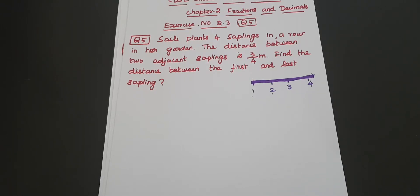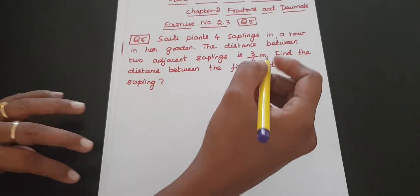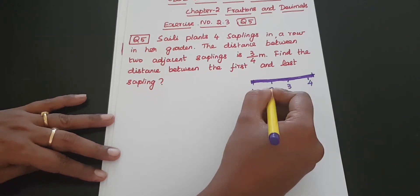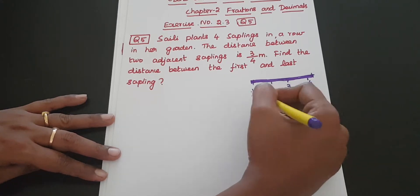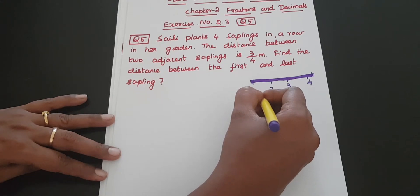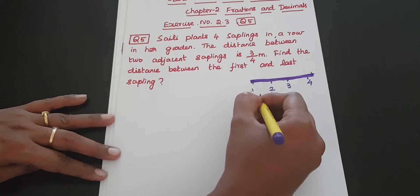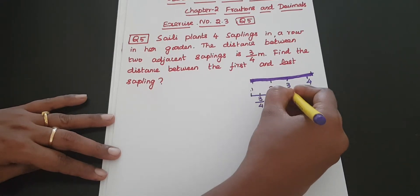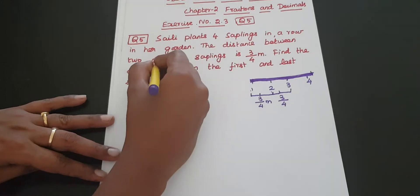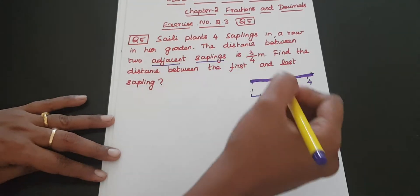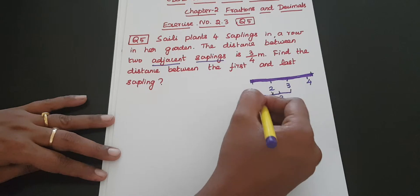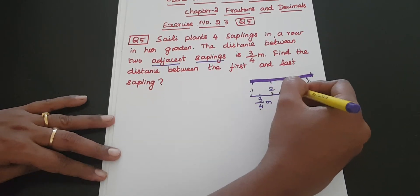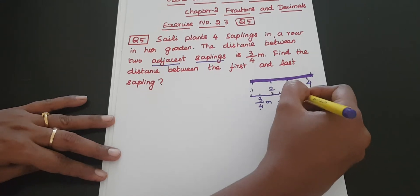Find the distance between the first and last sapling. So Saili plants 4 plants: 1st plant, 2nd plant, 3rd plant, 4th plant. The distance between 1st and 2nd plant is 3/4 meter, 2nd and 3rd plant is 3/4 meter, 3rd and 4th plant is 3/4 meter.